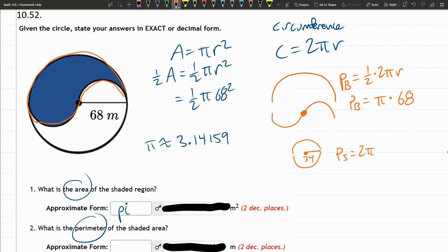This is 2 pi r. We don't cut this in half. It's a full circle, but the radius is small. The radius is 34. So this PS is 2 pi times 34. 2 times 34, that's 68 pi.